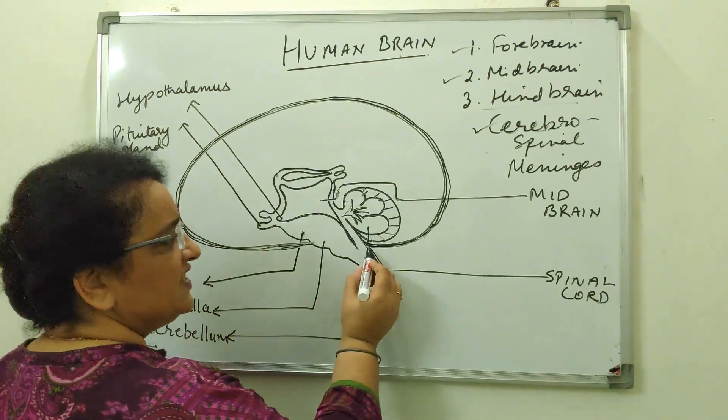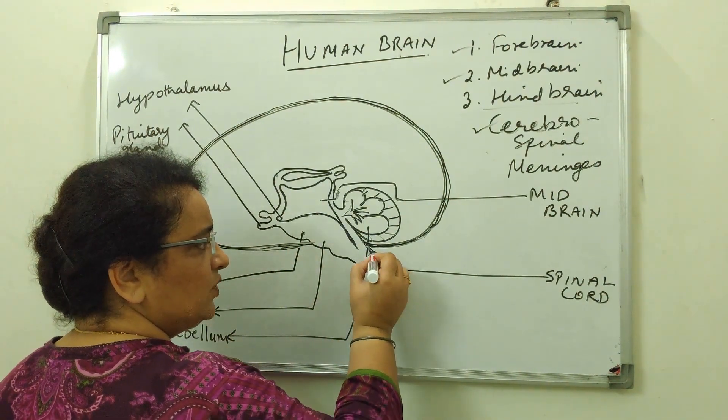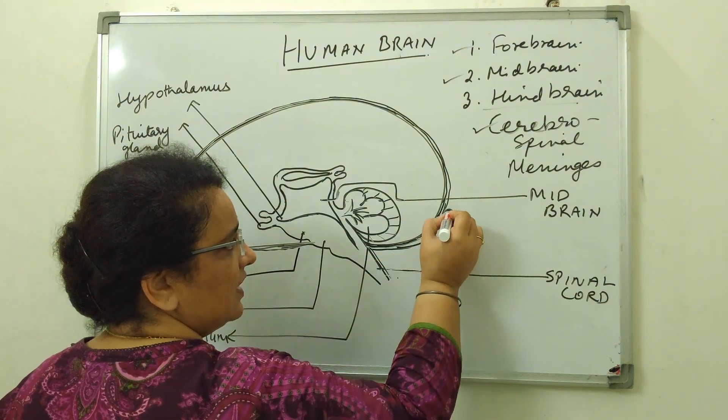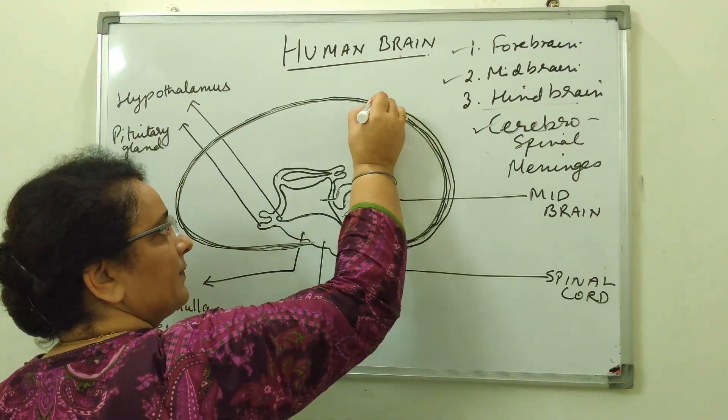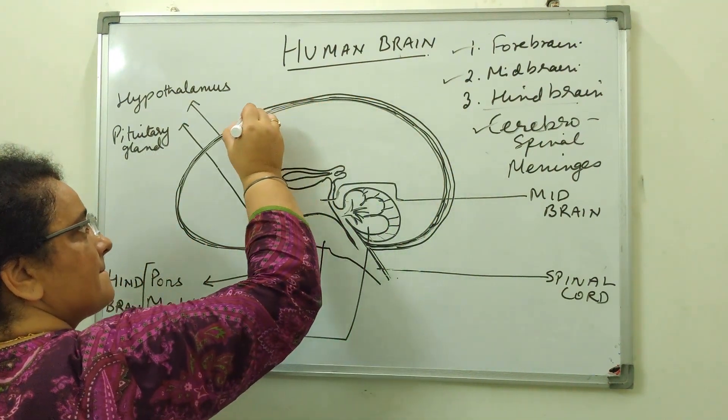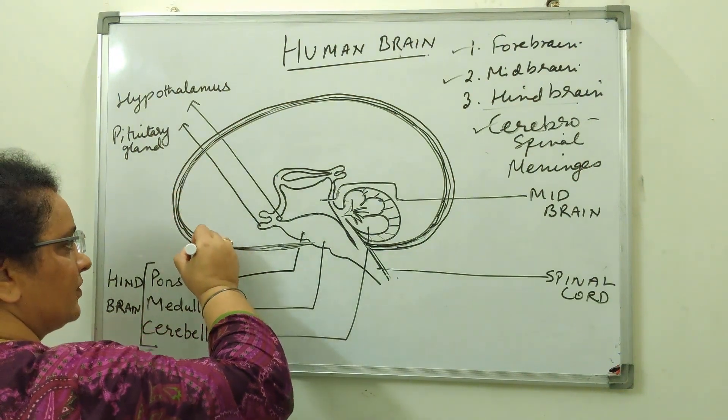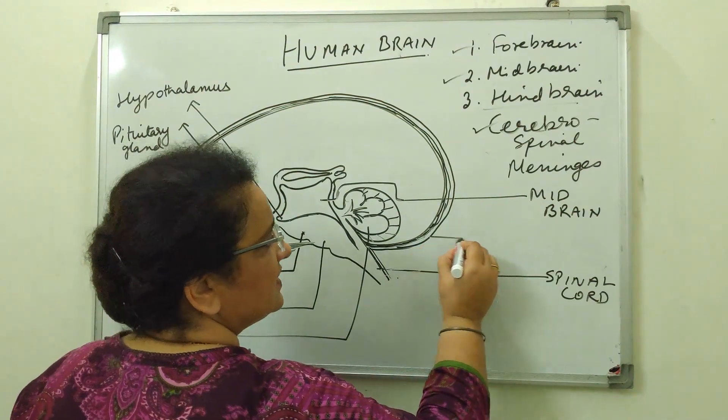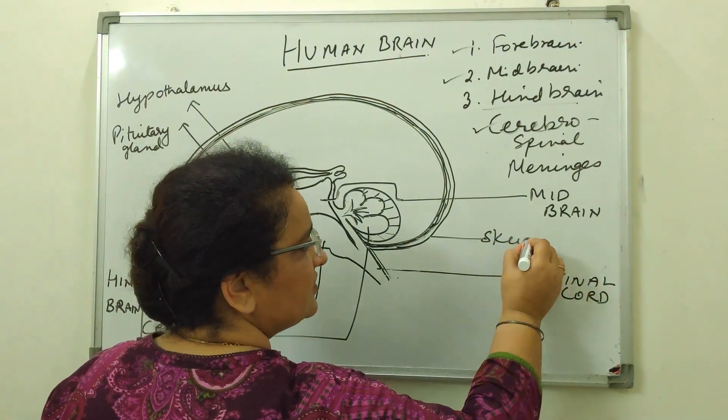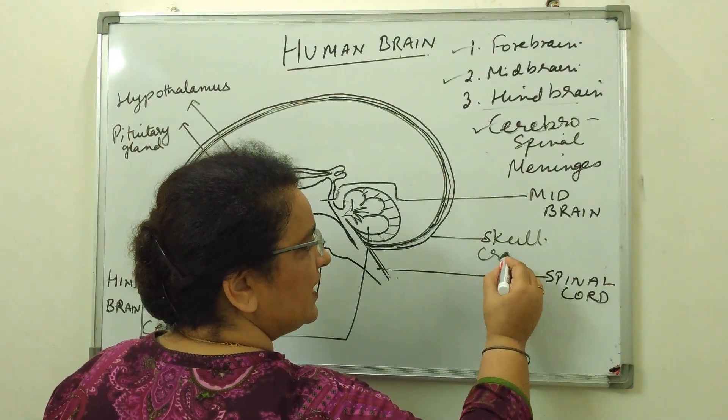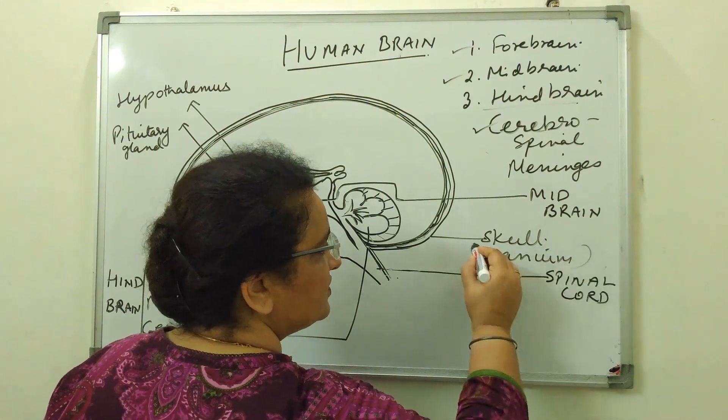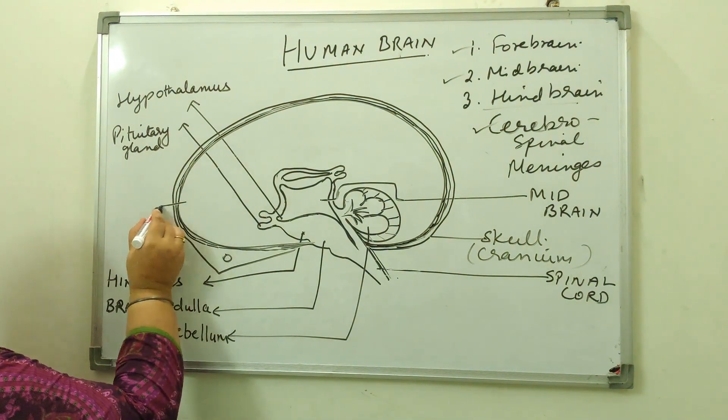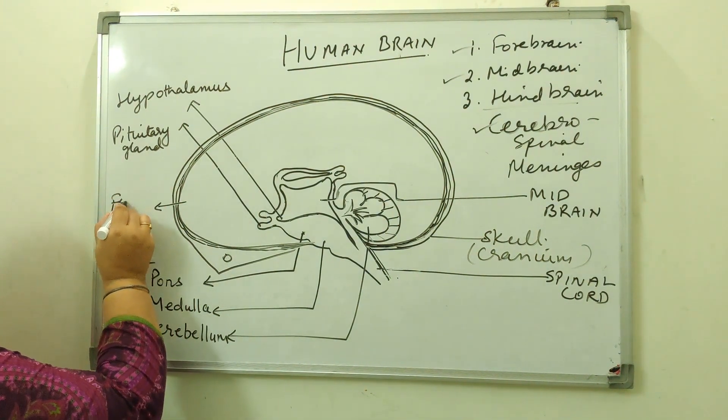And outside this meninges, the brain is enclosed with a bony structure called skull. This part is the skull and it is also known as the cranium. Now this largest part of the brain is the forebrain.